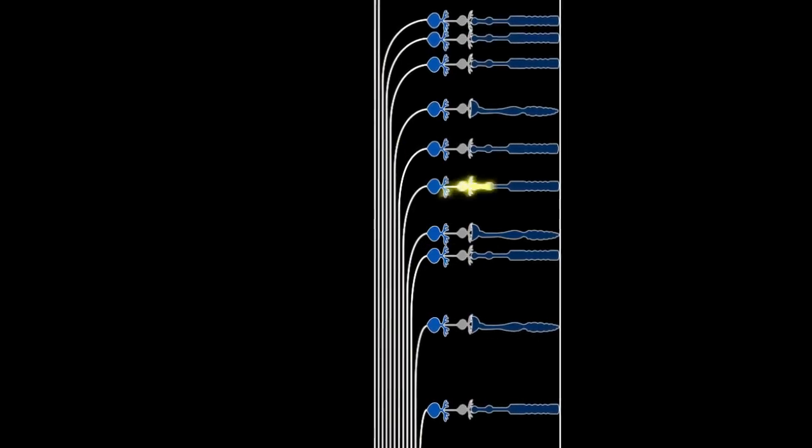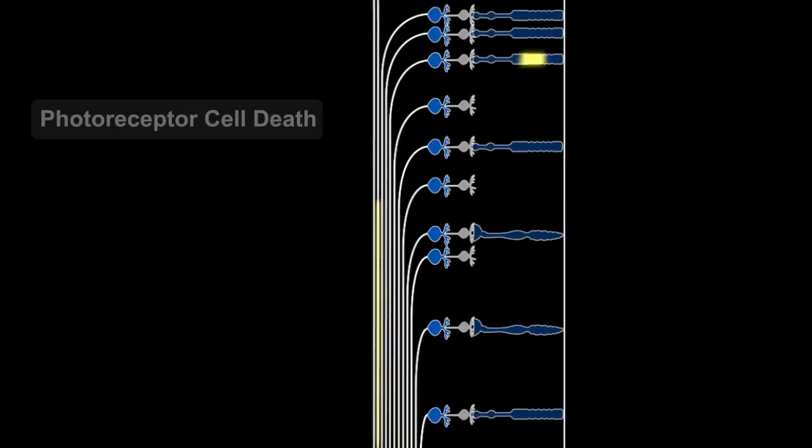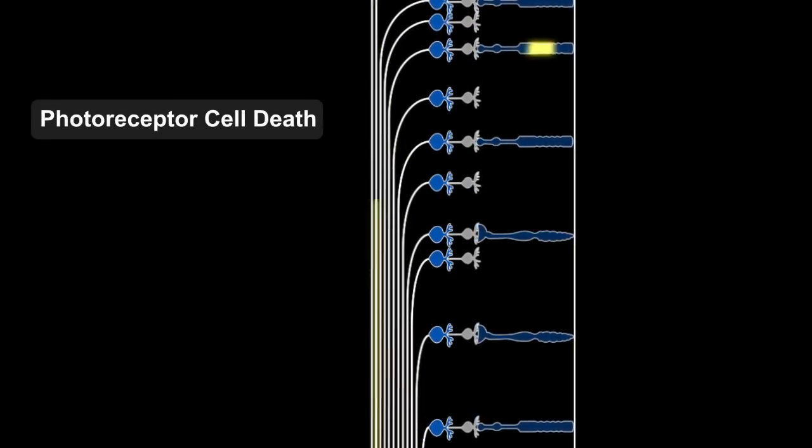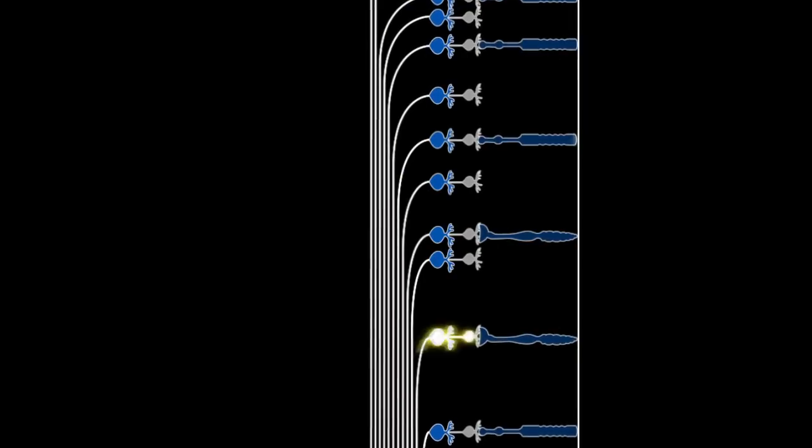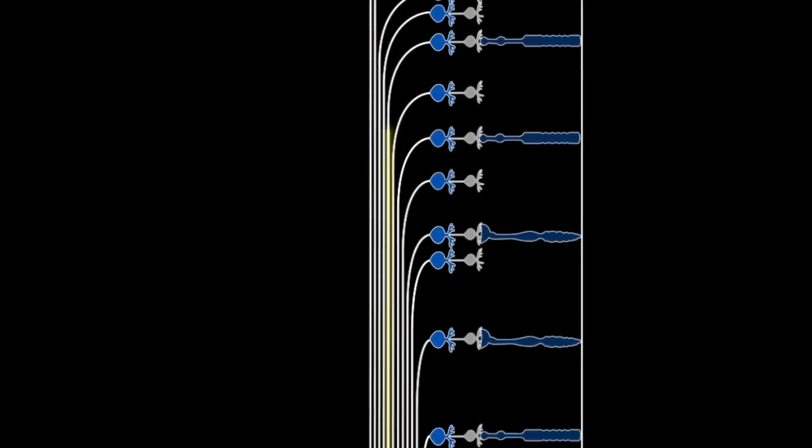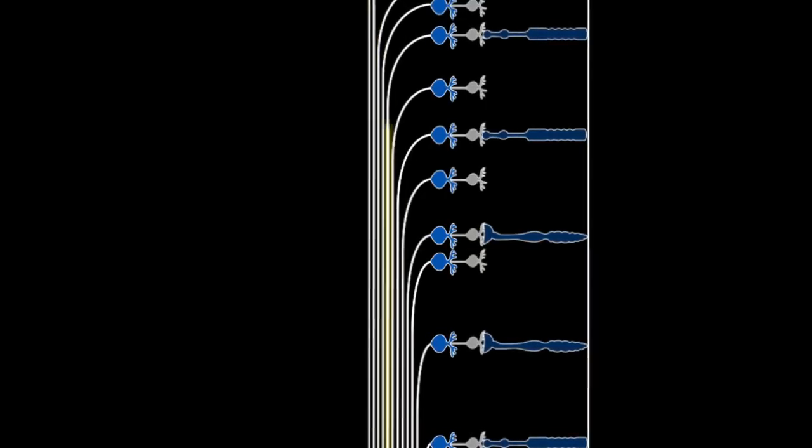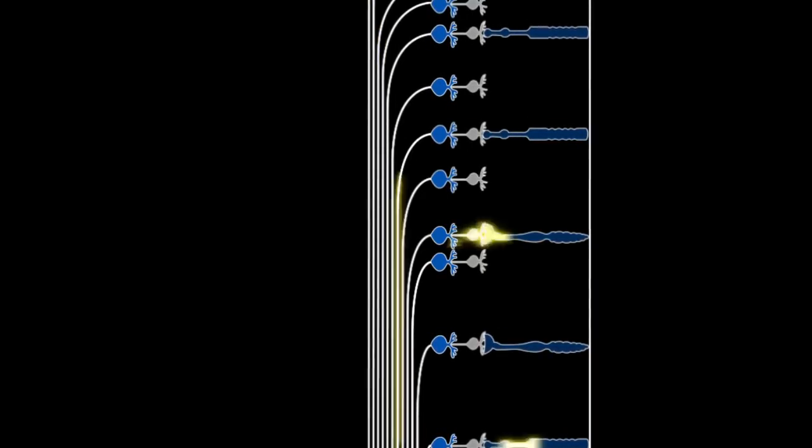Without photoreceptors, your eyes would be unable to detect light and you would be blind. A wide variety of diseases can damage or even destroy photoreceptors. These include age-related macular degeneration, the most common cause of vision loss in developed countries, and retinitis pigmentosa, a rare genetic disease.